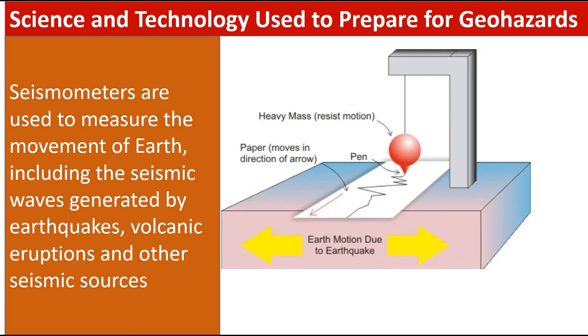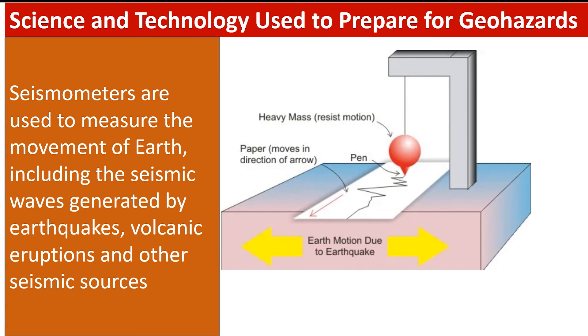Seismometers are used to measure the movement of the earth, including the seismic waves generated by earthquakes, volcanic eruptions, and other seismic sources.